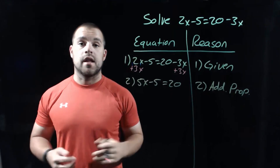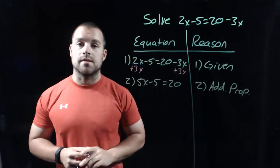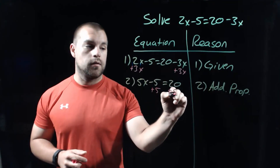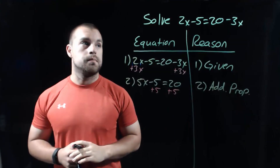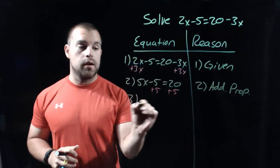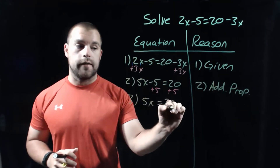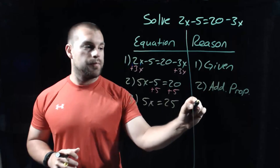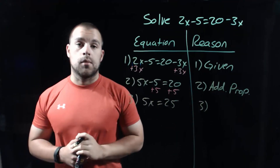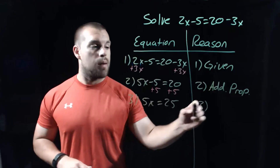Now the next thing we're going to have to do to get x all by itself is deal with this minus 5. We're going to add 5 to both sides of our equation. So the equation in step number 3 is going to say 5x equals 25. And again, we added something to both sides of the equation, so the reason is going to be the addition property.